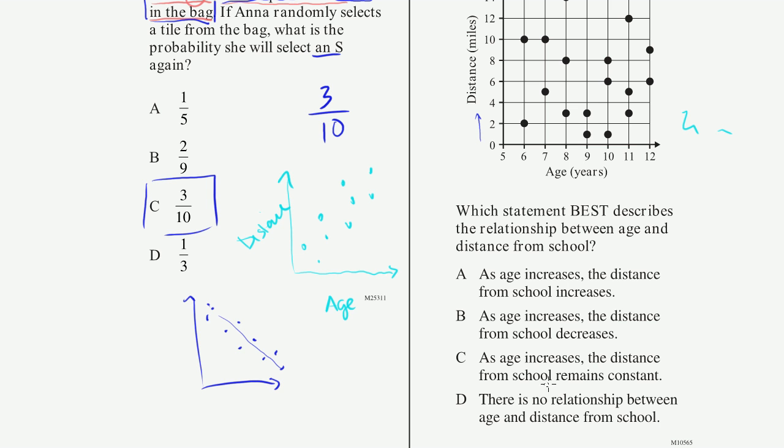C, as age increases, the distance from school remains constant. Well, what that describes, what C is describing, would have data that looks like this. That regardless of age, the distance from school is about the same. I don't really see that either. There's still a huge spread of distances.